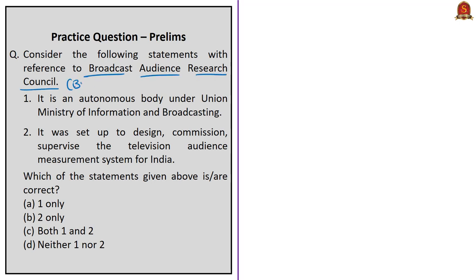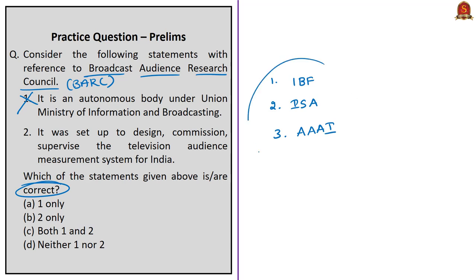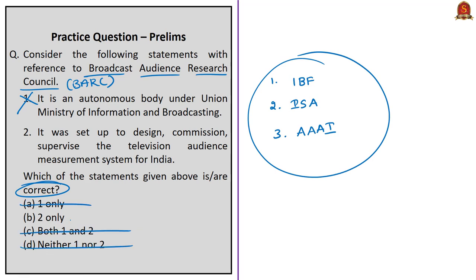This question is with reference to BARK — the Broadcast Audience Research Council. Two statements are given. Statement one: it is an autonomous body under the Union Ministry of Information and Broadcasting. This is incorrect — it is a joint industry company founded by stakeholder bodies representing broadcasters, advertisers, and advertising and media agencies, namely the Indian Broadcasting Foundation, Indian Society of Advertisers, and Advertising Agencies Association of India. Statement two: it was set up to design, commission, and supervise the television audience measurement system for India. This statement is correct. Therefore the correct answer is option B: statement 2 only.